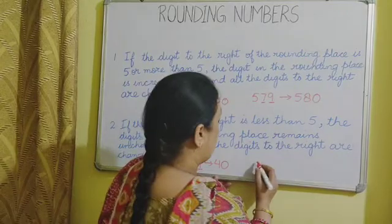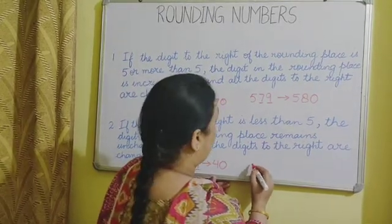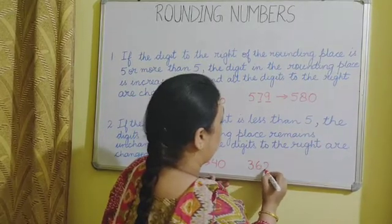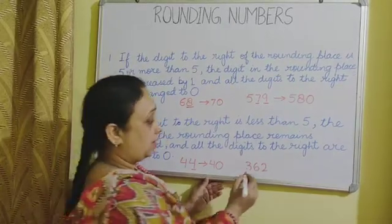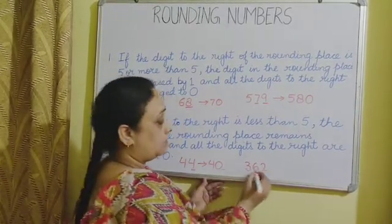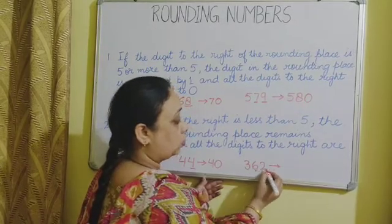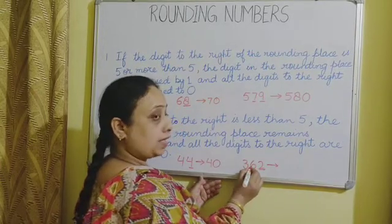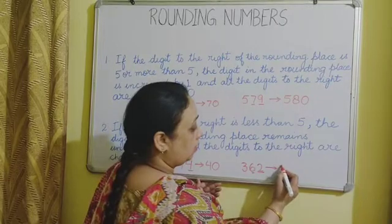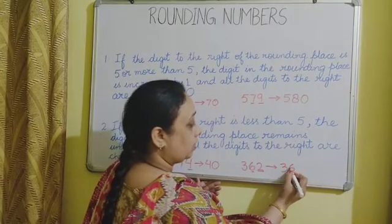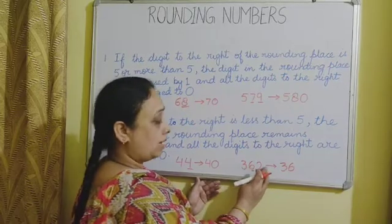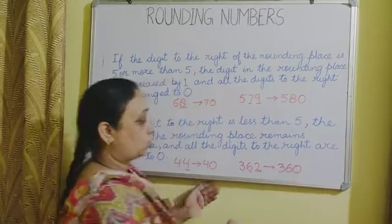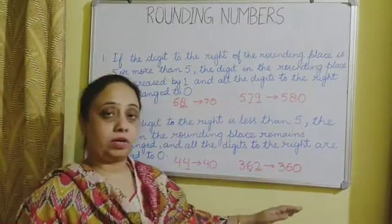Another example: if we want to round off 362 to nearest 10, we look at the 10's place. We look to the right — the 1's digit is 2, which is less than 5. So the 10's place remains the same — it will be 36 — and the number to the right, the 1's place, will be changed to 0. Therefore, 362 will be rounded off to 360.